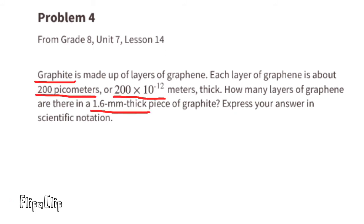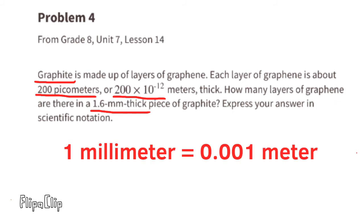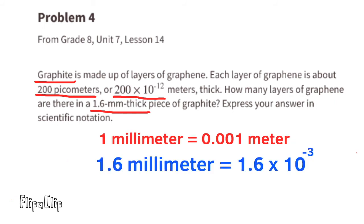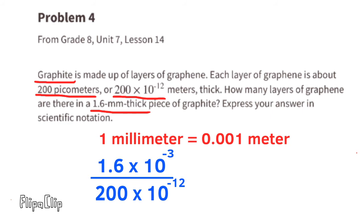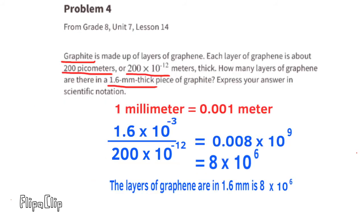Problem number 4 (from Unit 7, Lesson 14): each layer of graphene is about 200 picometers, or 200 times 10 to the negative 12 meters thick. How many layers are in a 1.6 millimeter thick piece of graphite? 1.6 millimeters equals 1.6 times 10 to the negative third power meters. Dividing by 200 times 10 to the negative 12th gives 0.008 times 10 to the 9th, which in scientific notation is 8 times 10 to the 6th — about 8 million layers.